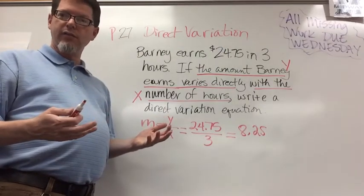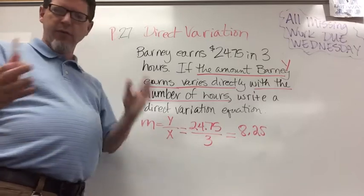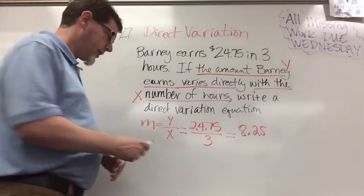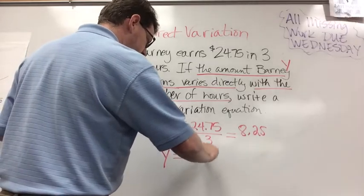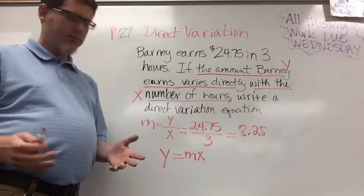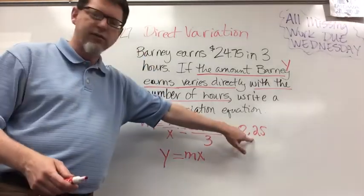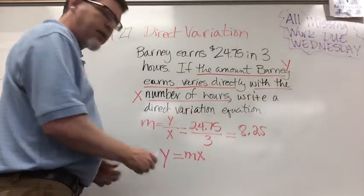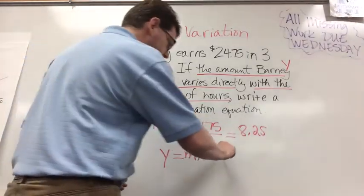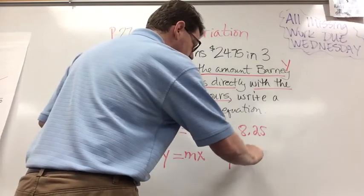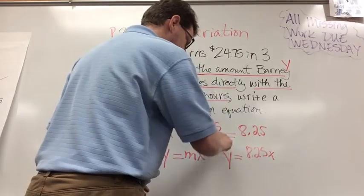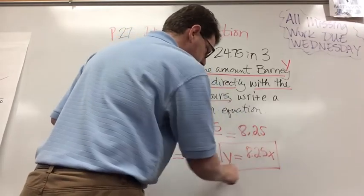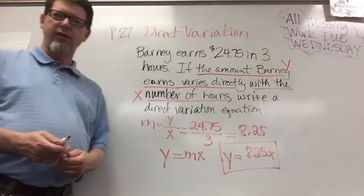So now I need a direct variation equation. Remember what the direct variation equation is? It's always y equals mx. What is m? Well, we figured out that m is $8.25. So I'm going to just plug that in. So my direct variation equation is y equals 8.25 times x. That is my direct variation equation.